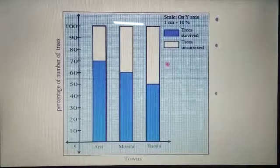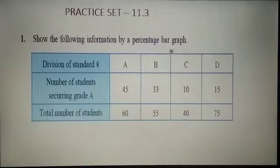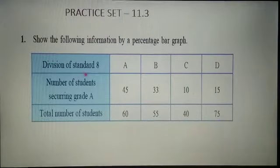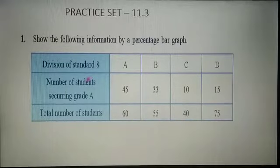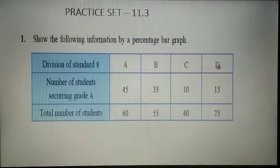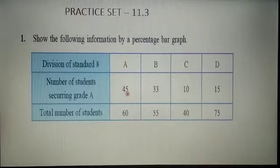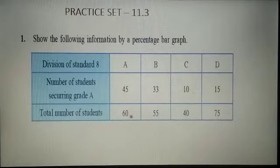Now let's start Practice Set 11.3. We will show the following information by a percentage bar graph. The table is on page number 73. Divisions of Standard 8 are given: Section A, B, C, and D. In Section A, 45 students out of 60 total secured Grade A. In Section B, total students were 55, and 33 secured Grade A.